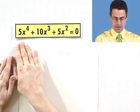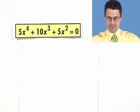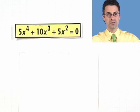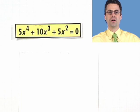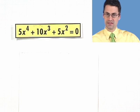Let's take a look at solving some polynomial equations that are sort of complicated. We'll start off by just looking for real solutions to polynomial equations. Here's an example: let's take a look at this polynomial equation — 5x to the fourth plus 10x cubed plus 5x squared equals zero — and I want to find the solutions.